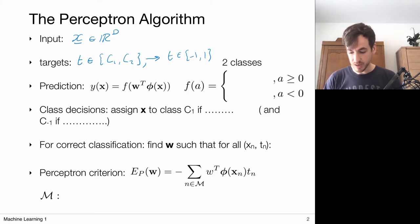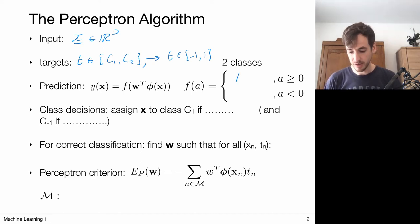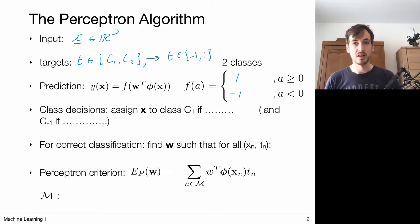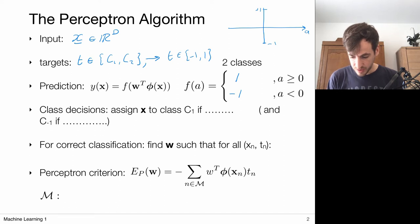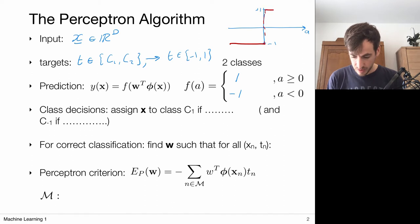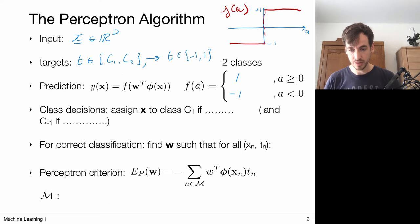This activation function looks like this. As a function of a, it assigns the value one whenever a is bigger or equal to zero, and it assigns the value minus one when it's smaller than zero. So we have the a axis over here, the value minus one, the value plus one, and the function assigns minus one on the negative axis and then jumps to one on the positive axis. It's a step function.